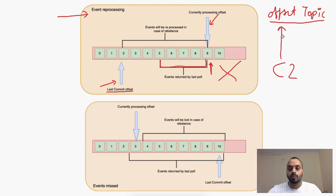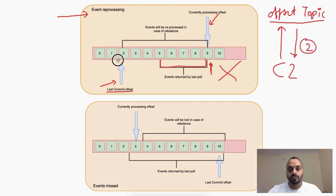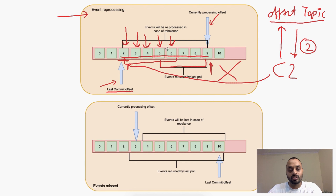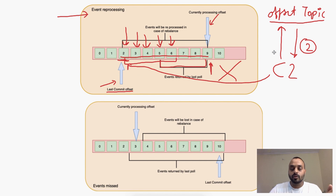The new consumer C2 comes in and asks the offset topic from where it should start reading. It will say to start from 2, because the last committed offset on record is 2. So C2 will poll 5 messages from 2 to 6 and start processing. The messages from the last committed offset up to the currently processing offset will be reprocessed because we did not update the last committed offset in time.